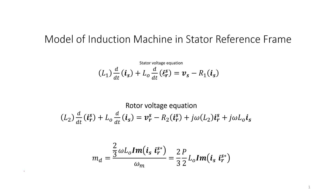Now we have two unknowns, Is and Ir, and two equations. How do we solve this? We multiply the first equation with L2 and multiply the second with L0 and subtract.